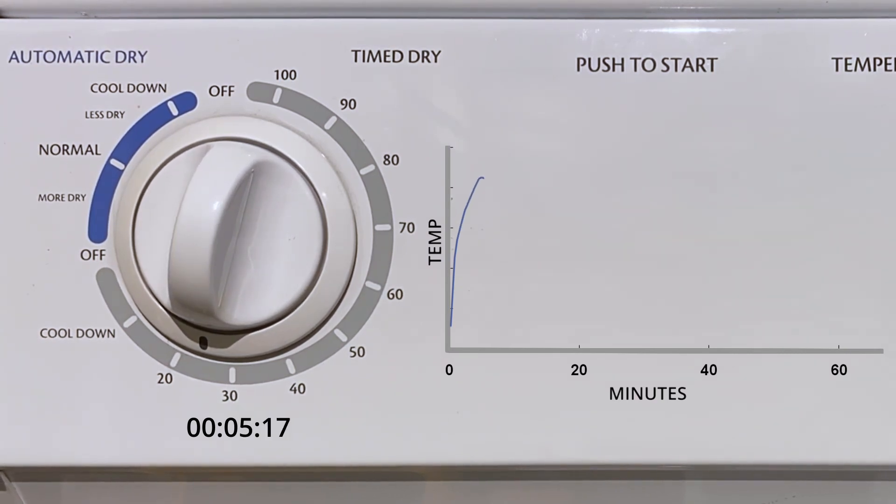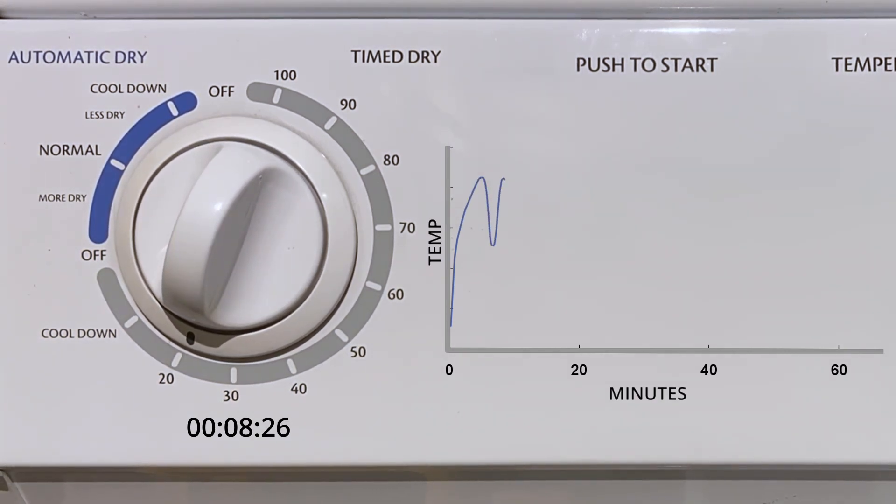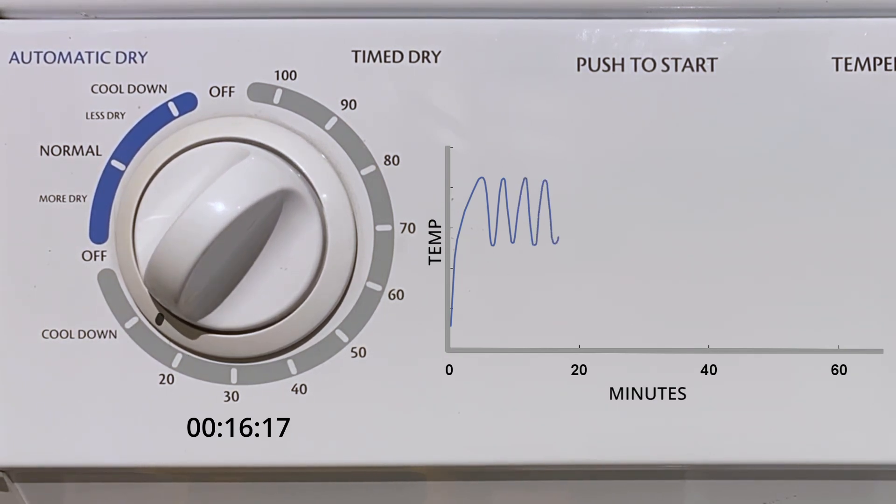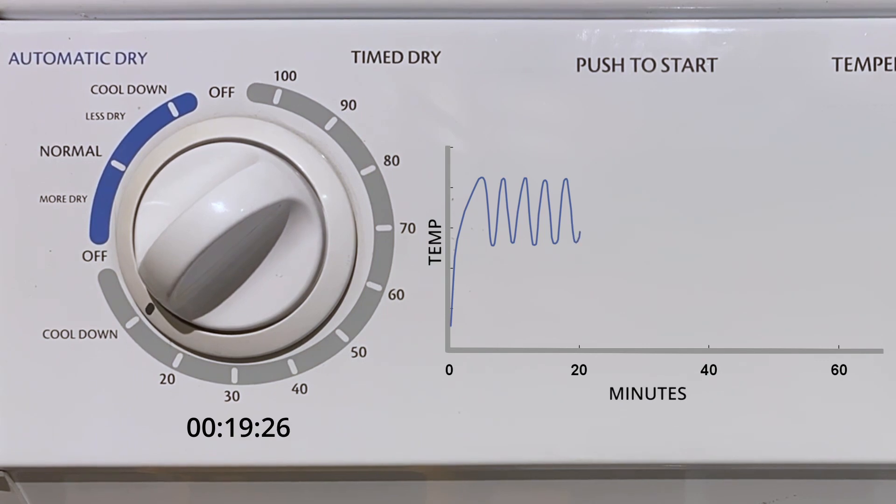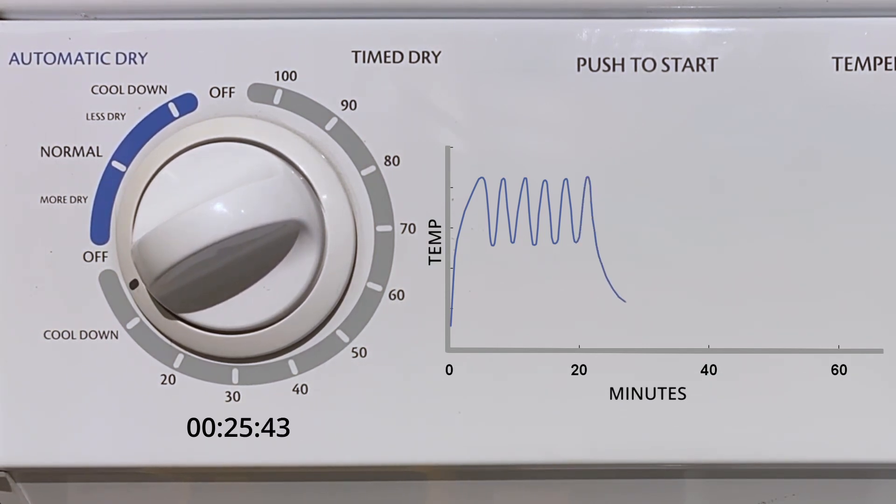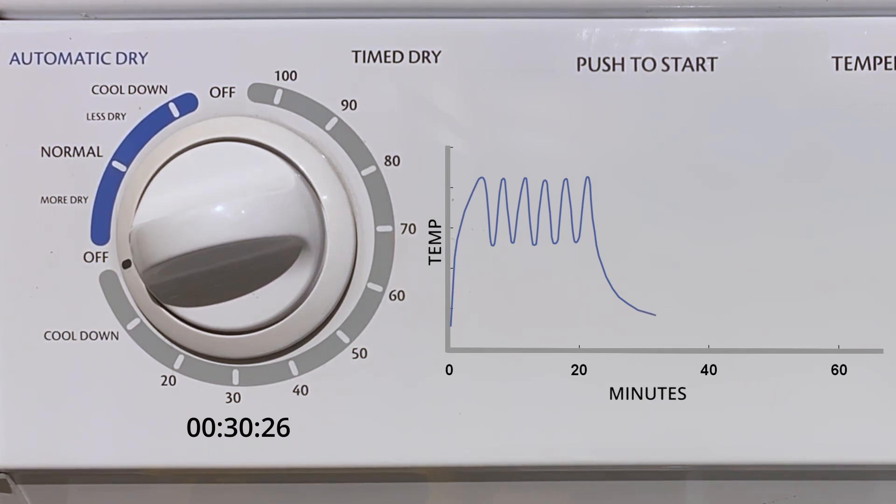You'll notice the knob continuously advances towards off while the heating element cycles between the upper and lower trip points of the temperature switch. The heating element continues to cycle on and off until the knob reaches cool down, at which point the heater stays off until it reaches the end of the cycle after 30 minutes and the buzzer sounds.